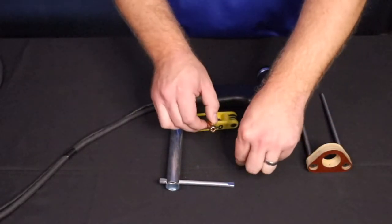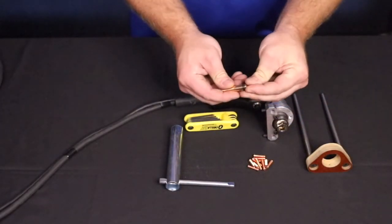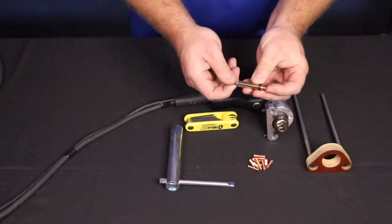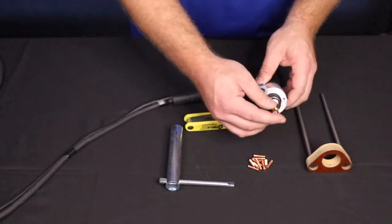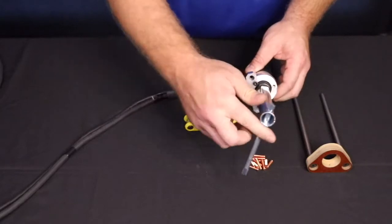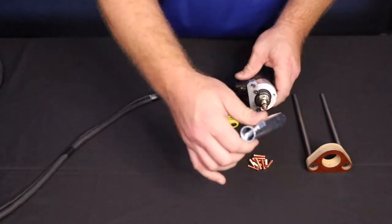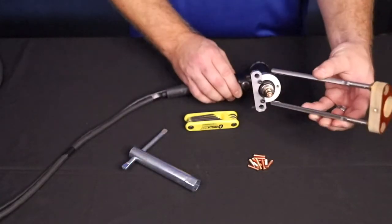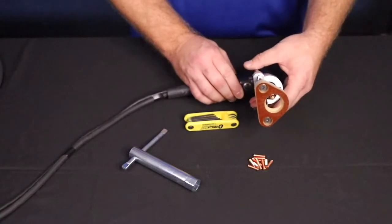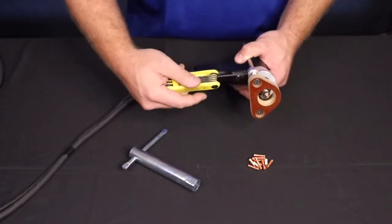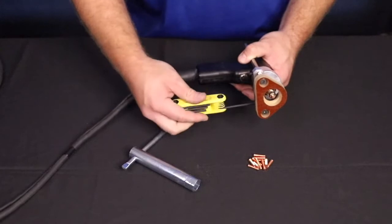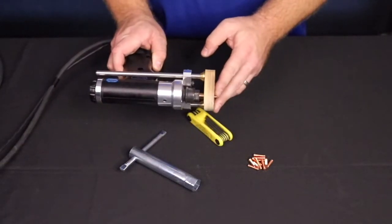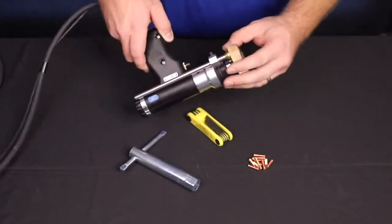Shooting weld studs requires the use of a collet. First, make sure you have the correct collet for the stud. Insert the collet into the gun shaft until it bottoms. Then, tighten the retaining nut until snug. Please note that failure to tighten this properly will result in damage to the gun shaft and collet. Adjust the foot piece to achieve 1/8th of an inch of stud stick out past the foot piece.